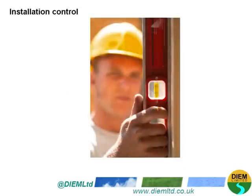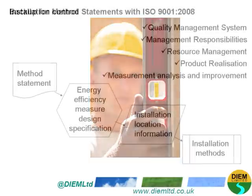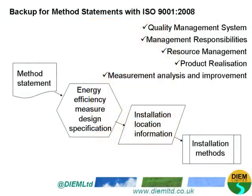The installer shall have in place and operate a documented installation control procedure appropriate for the validation of the installations undertaken, with validation checks conforming to the energy efficient measure specifier's specification and any relevant installation methods. A record must be taken of the installation control outcomes for each installation undertaken and should be signed off by the installer. A good backup for the method statements under PAS 2030 is to operate a robust quality management system, ideally to the ISO 9001-2008 standards, as it will set management responsibilities, resource management, product realisation, and measurement analysis and improvement — making the links between ISO 9001 and PAS 2030 very strong.